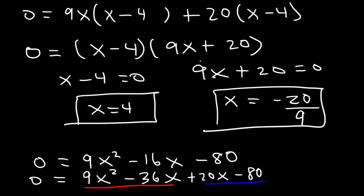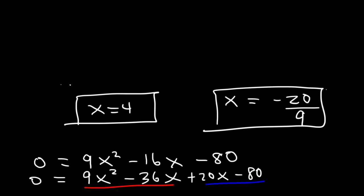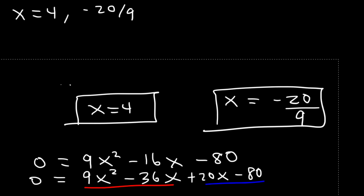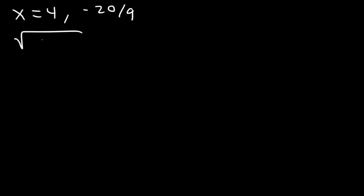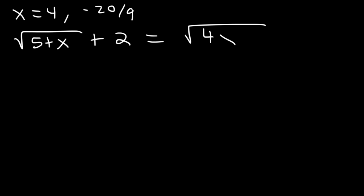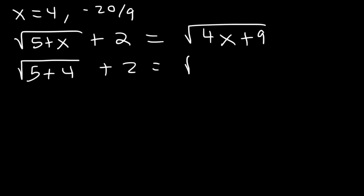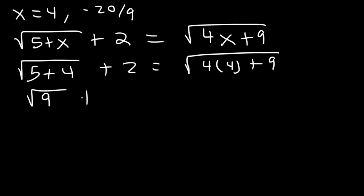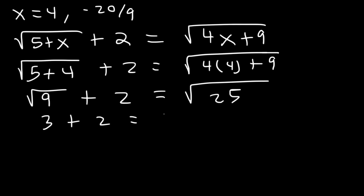Now let's make sure both answers are correct. The original problem is root (5 plus x) plus 2 equals root (4x plus 9). Replacing x with 4: 5 plus 4 is 9, and 4 times 4 is 16 plus 9 is 25. The square root of 9 is 3 and the square root of 25 is 5. 3 plus 2 is 5. The equation is balanced, so x equals 4 is indeed correct.